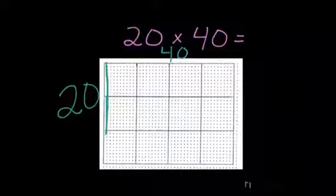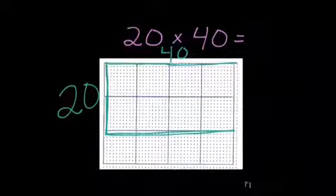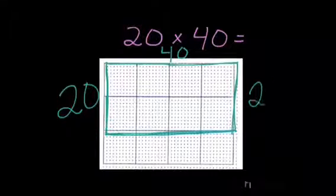On the other side, I'm going to count out 40. 10, 20, 30, 40. I complete my rectangle by tracing another 40 and another 20. This side is 20 and this side would be 40.